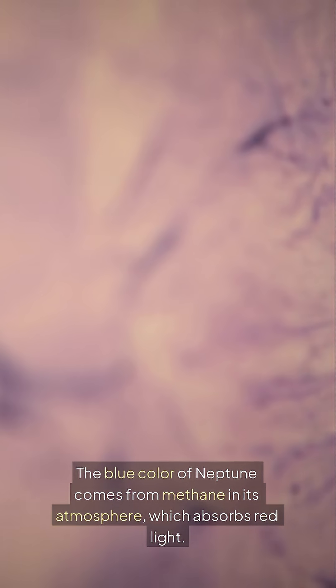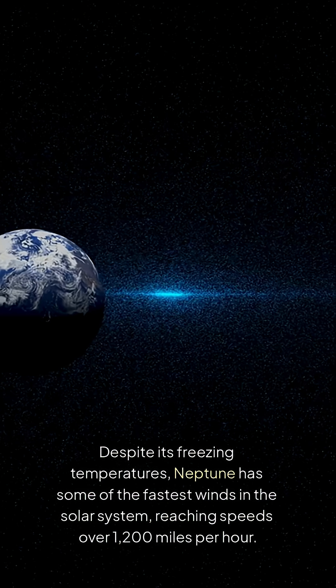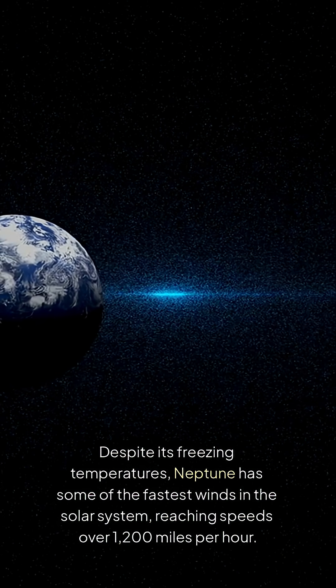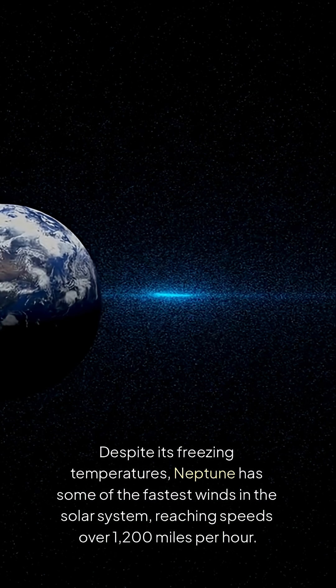The blue color of Neptune comes from methane in its atmosphere, which absorbs red light. Despite its freezing temperatures, Neptune has some of the fastest winds in the solar system, reaching speeds over 1,200 miles per hour.